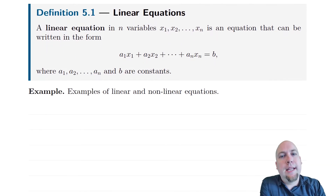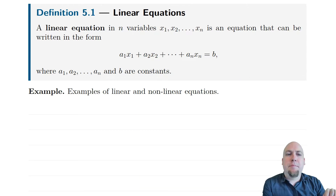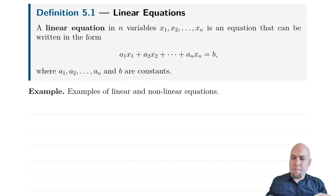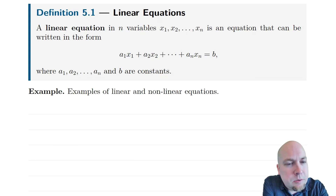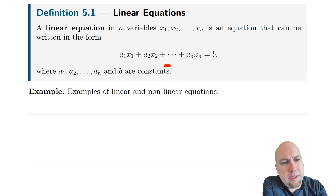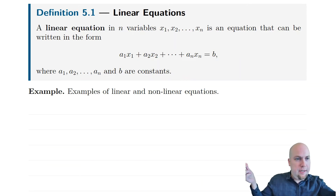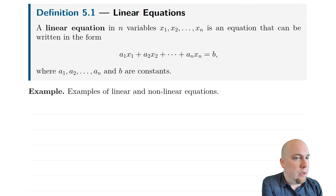So what is a linear equation? It's an equation with a whole bunch of variables, except you can't do crazy things to those variables — no exponentials, logarithms, trig functions, or anything like that. Instead, all we're going to do is multiply them by some constants: a1, a2, up to an — those are just numbers — and b is also a number. We're taking linear combinations of variables, doing scalar multiplication and addition. That's all we're allowed to do, and if those are the only things you do, that's called a linear equation.